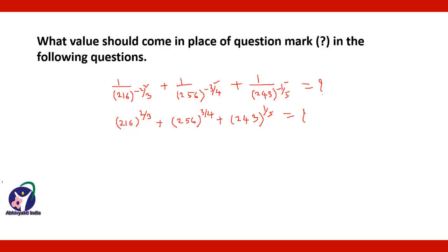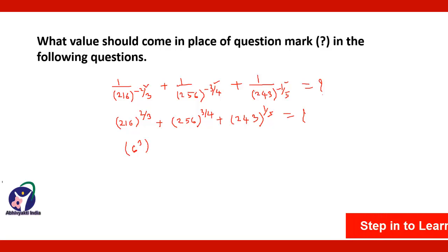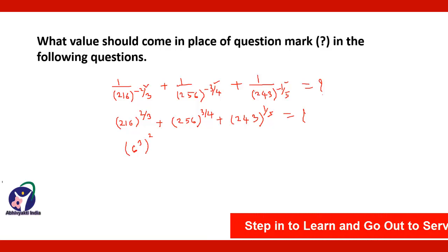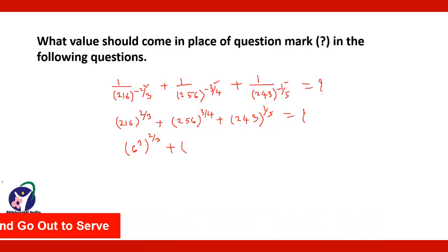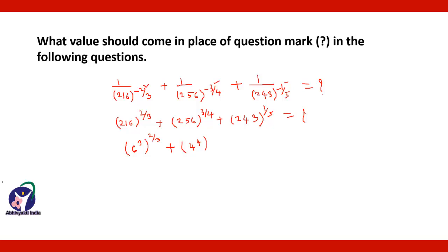Now, 216 can be written as 6 to the power 3, to the power 2/3. And 256 can be written as 4 to the power 4, to the power 3/4. Plus 243 can be written as 3 to the power 5, to the power 1/5.